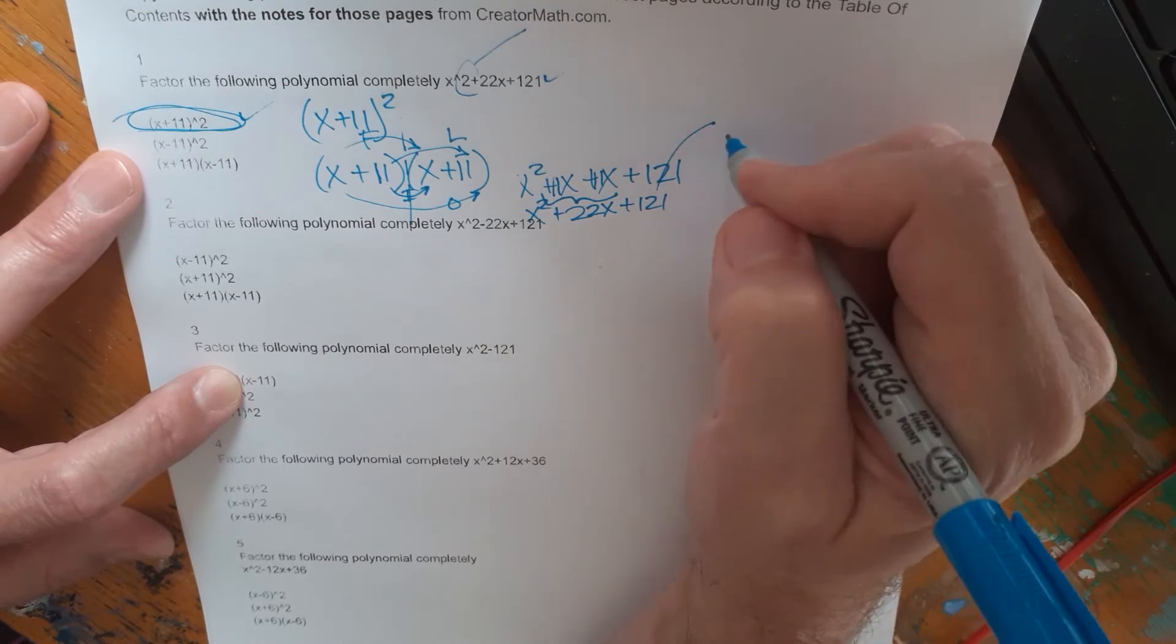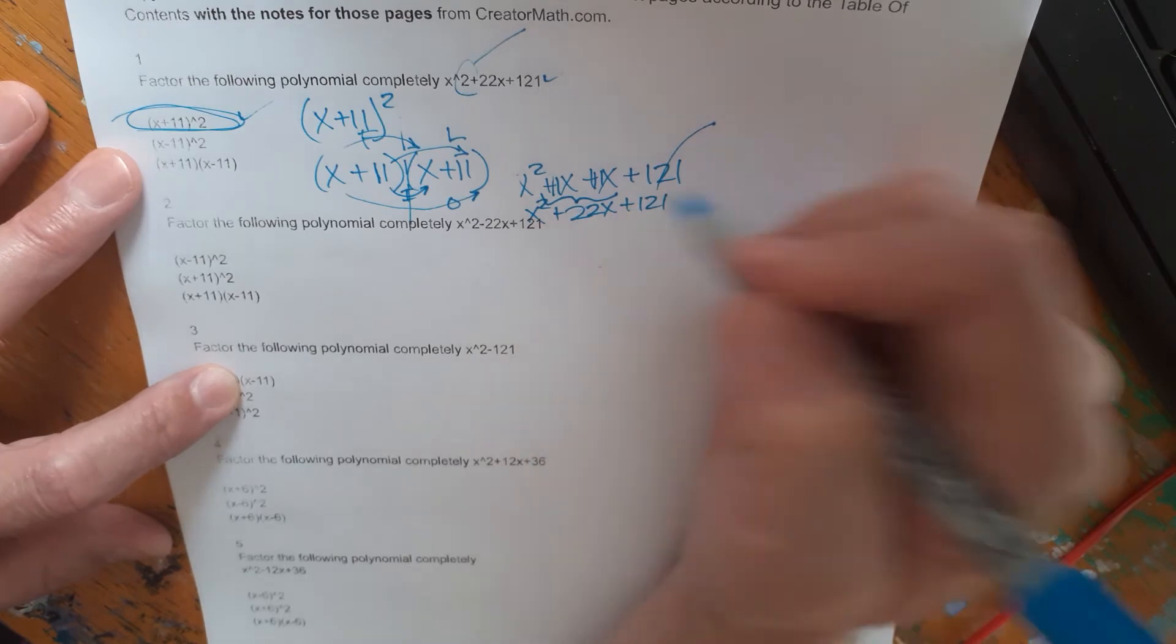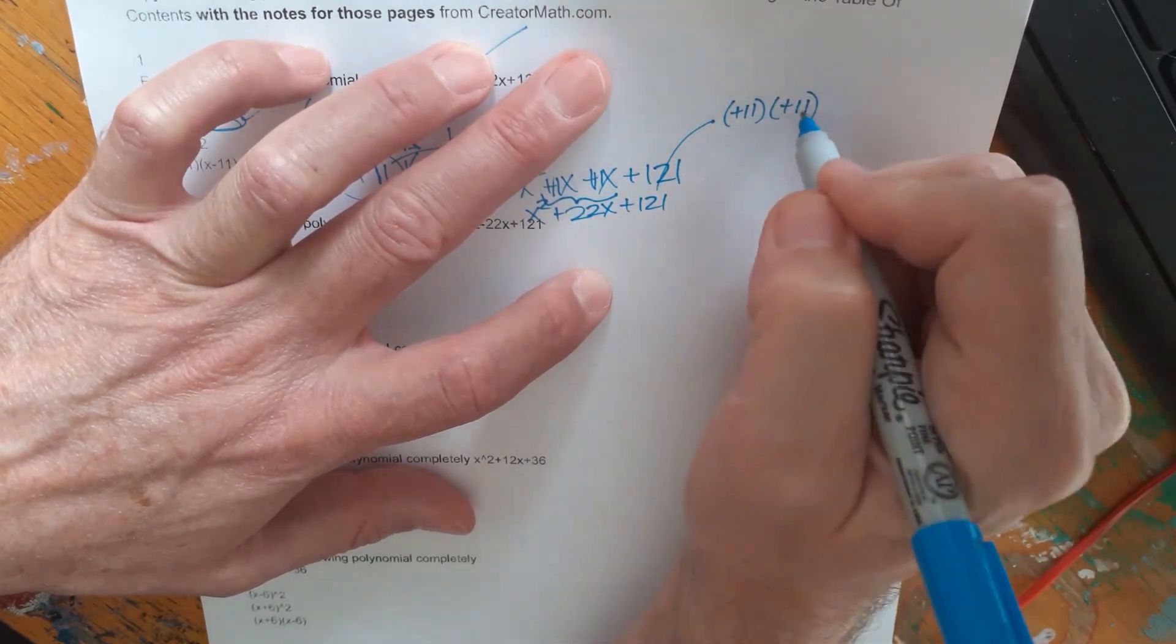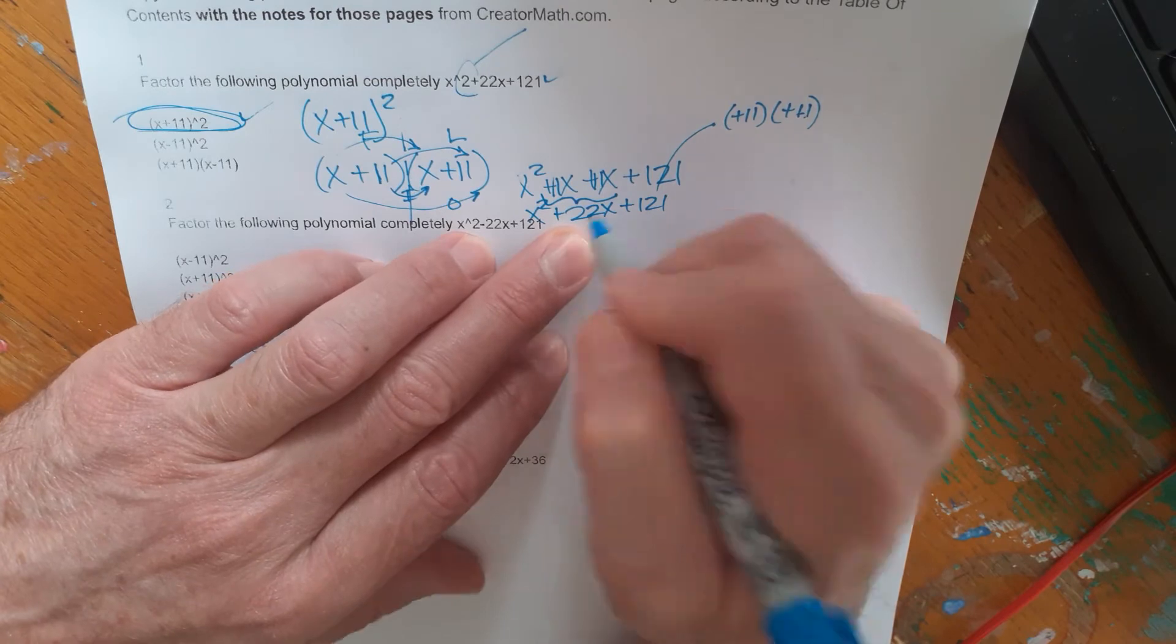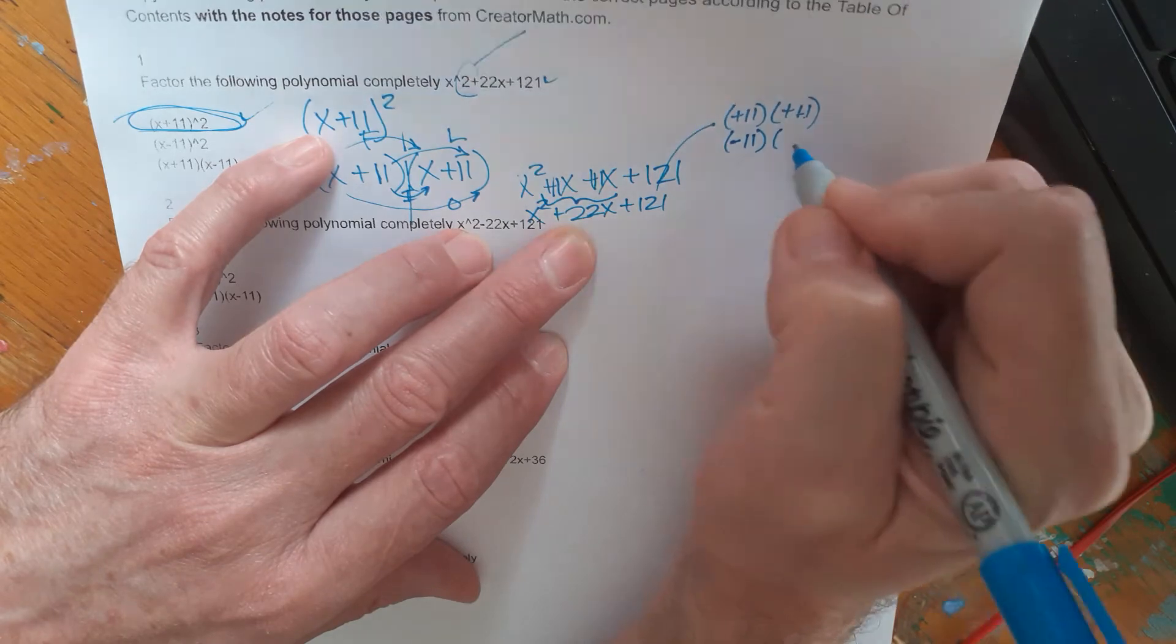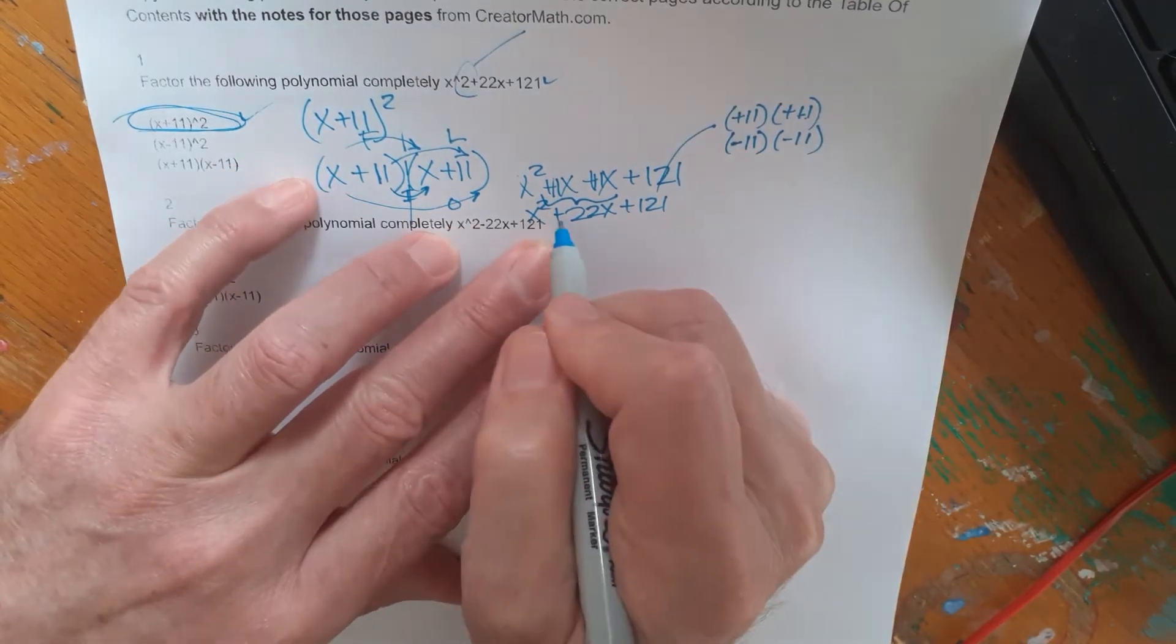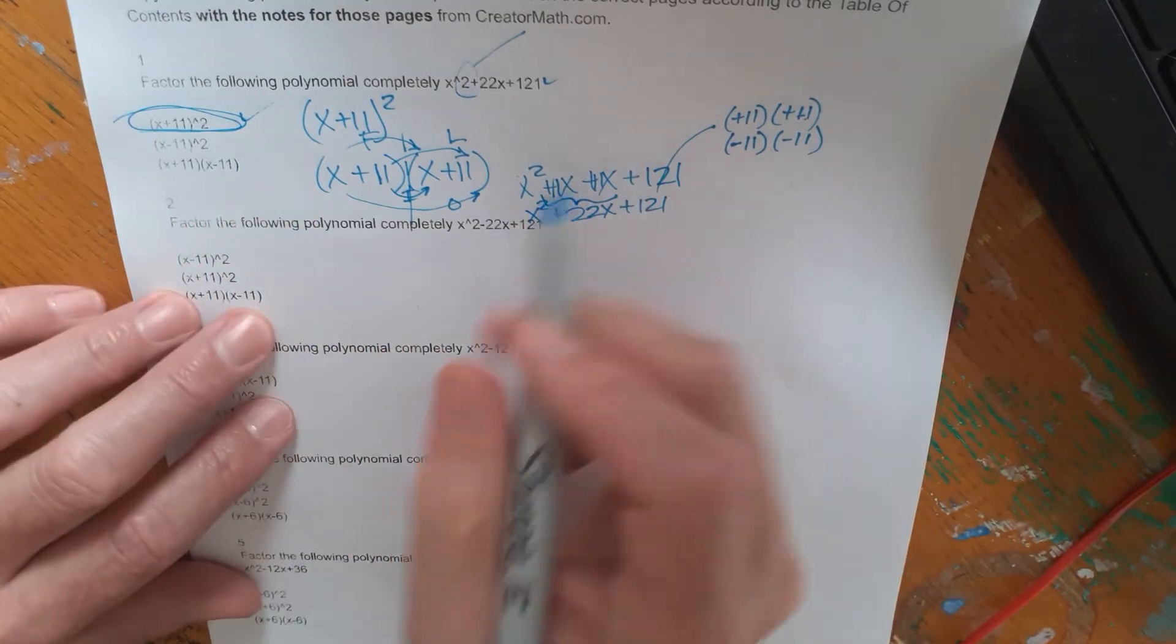When we go backwards, we're asking what two values when multiplied equal this number and when added equal this number. So when we factor, we go in reverse. If we had plus 11 times plus 11, we would get 121 here, and if we added them, we'd get a positive 22. But just as a note, if we had negative 11 times negative 11, because two negatives equal positive, that does multiply to equal positive 121. But when we add them, we'd get a negative 22x here.